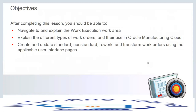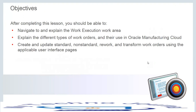In this chapter, we will see how to navigate to the work execution work area and what features and tasks are available within it. We will see how to define and execute a work order, and what the different types of work orders are. We support both standard and non-standard work orders. We can create, update standard, non-standard, rework, and transfer work orders using the applicable user interfaces.